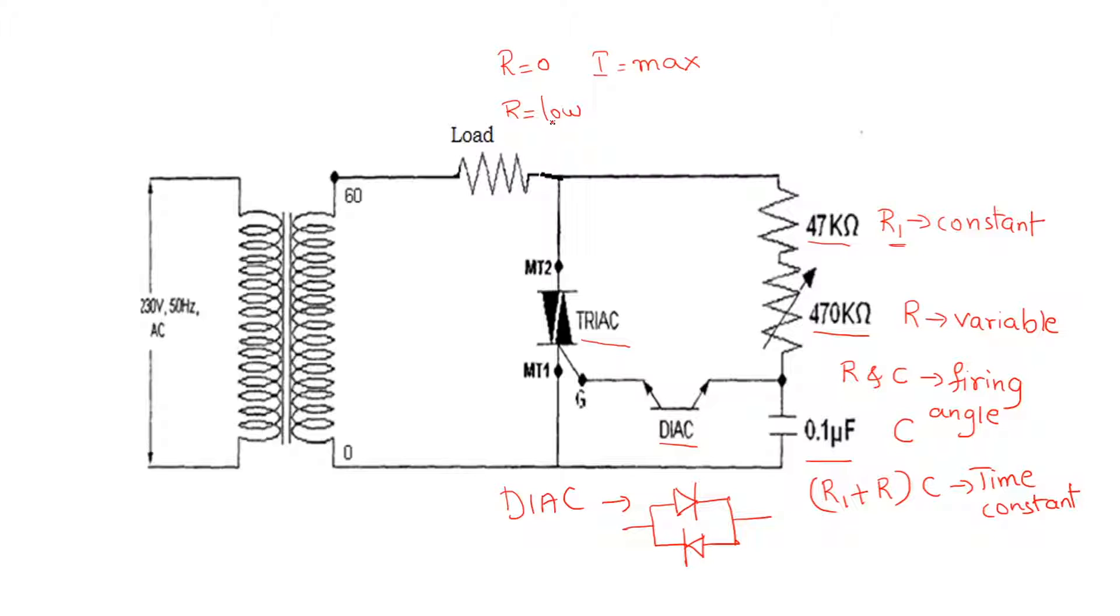If R value is low, the current will be high. The capacitor gets charged. When the capacitor charges to a voltage sufficient for this diode to conduct, the DIAC will turn on. When the DIAC turns on, the capacitor starts discharging. This voltage appears as a pulse across the gate terminal of TRIAC, which makes the TRIAC conduct.